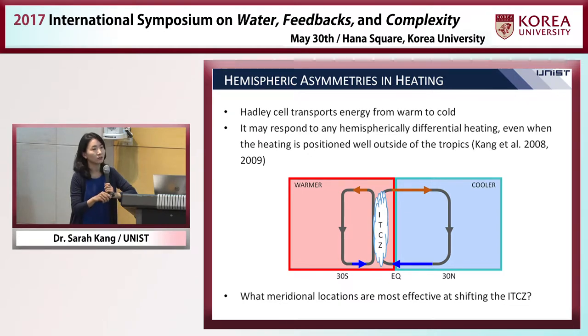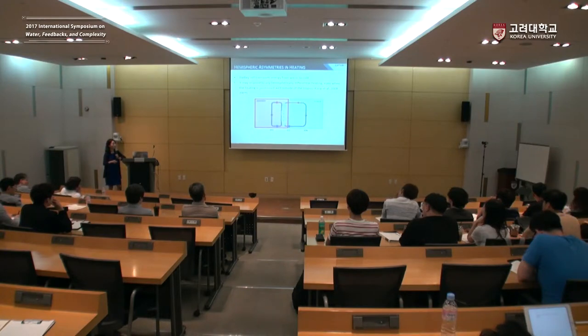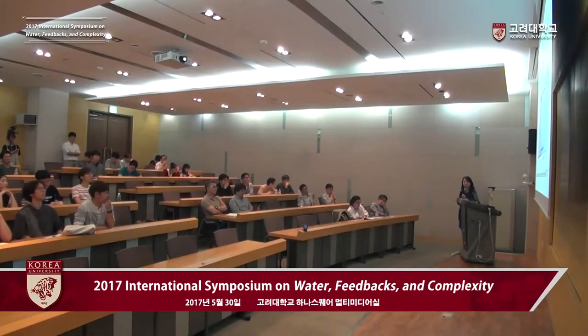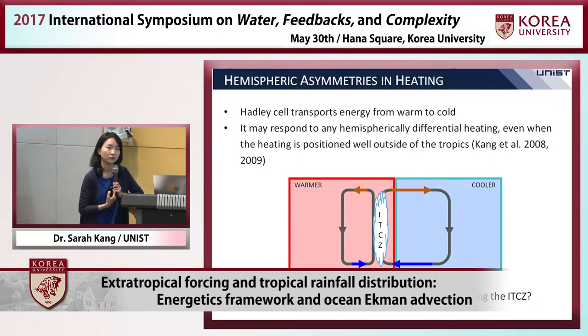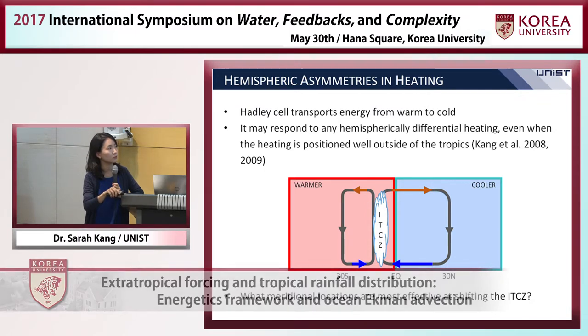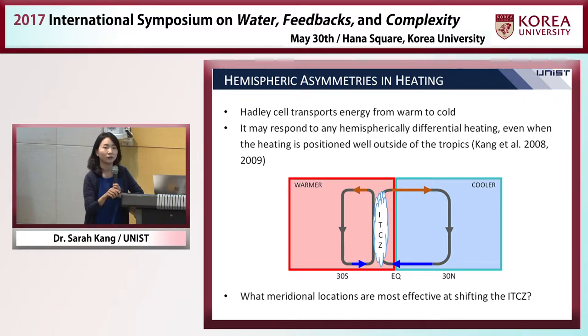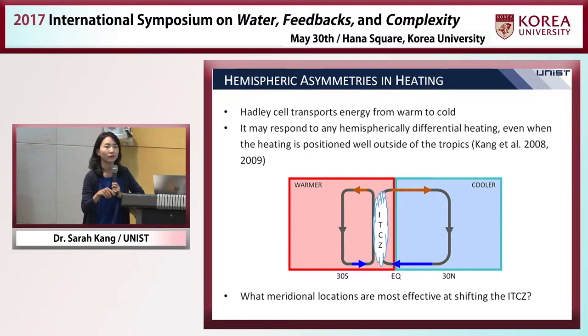This brings us back to the question: which meridional locations are most effective at shifting the ITCZ? We can consider differential thermal forcing located near the equator in one case, or located near the pole in another. If the radiation balance between hemispheres is satisfied in the tropics but not in the extratropics, that imbalance must be satisfied by modulating the ITCZ location. Which forcing is more effective at perturbing the ITCZ?